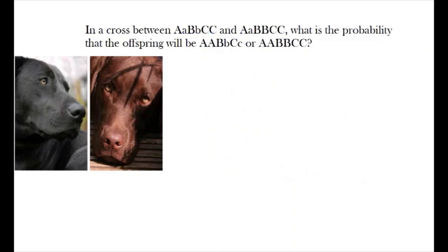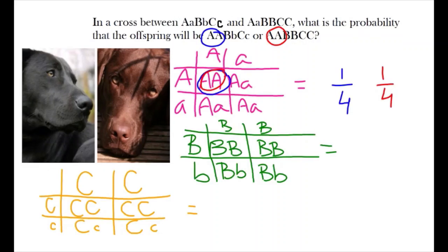Just like last time, we're going to be setting up different Punnett squares for our separate alleles. In our first Punnett square, we have our alleles set up to show us that there is a one-fourth probability of having a homozygous dominant genotype, which is what we want for both alternative genotypes of the puppies.